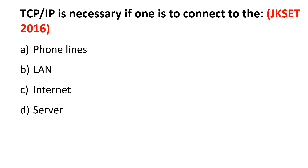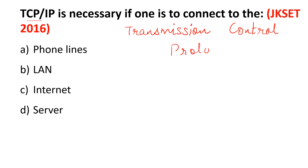Next question: TCP/IP is necessary if one is to connect to the internet. TCP stands for Transmission Control Protocol and IP stands for Internet Protocol. This is very important terminology. TCP/IP is used to communicate over the internet — it is the protocol you need to connect to the internet. Very simple question.